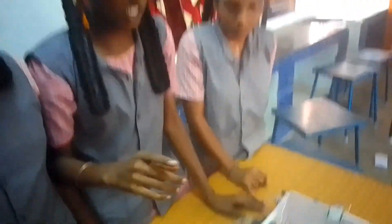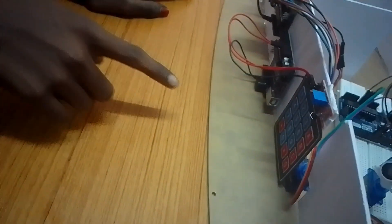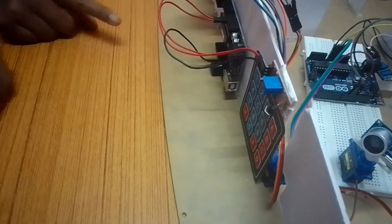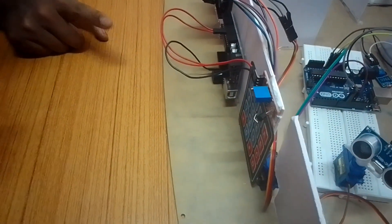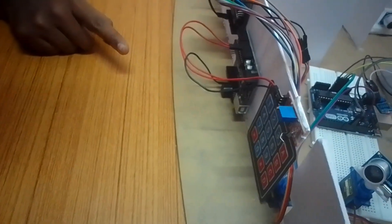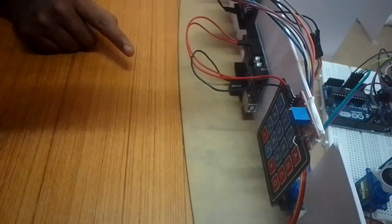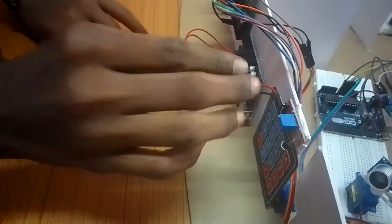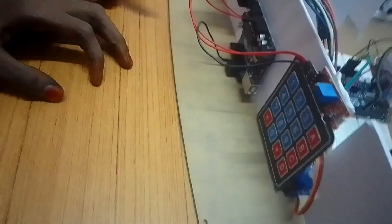The first one is the keypad system. The keypad system is used as a keypad lock, face lock, finger lock, and eye lock. But if we use it as a keypad lock, we can use it as a keypad lock.